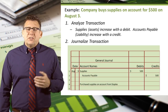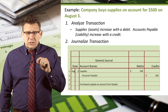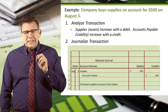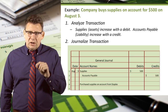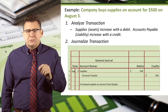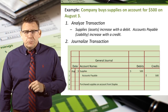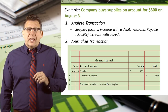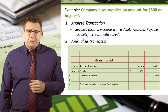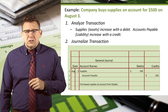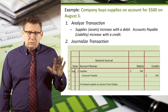So first we enter the date, August 3rd. Then we list the debit account first, so we enter supplies. It wouldn't technically be wrong to list the credit account first, but it would look wrong to every practicing accountant — so always enter the debit accounts first. Then we record $500 in the debit column. Next, we enter accounts payable as the credit account. Normally we indent credits, as you can see here. And finally we enter $500 into the credit column.